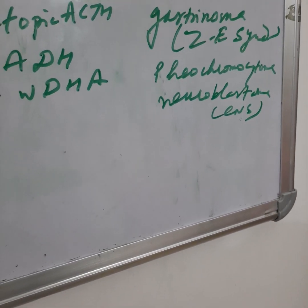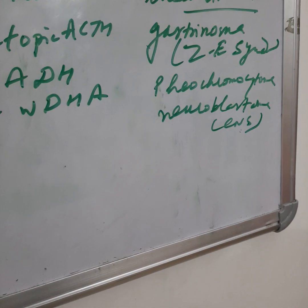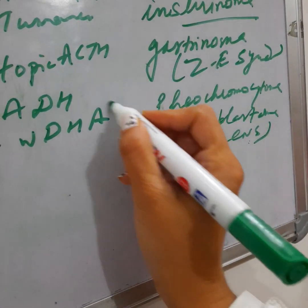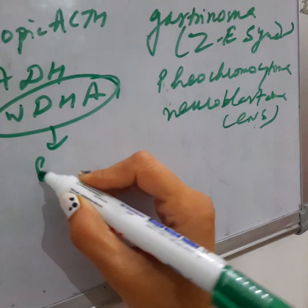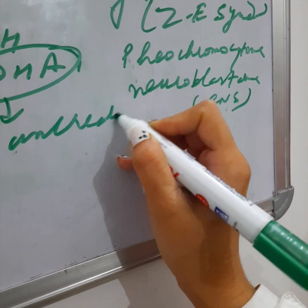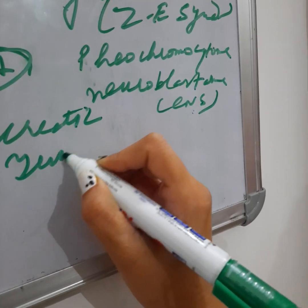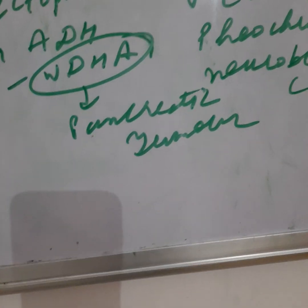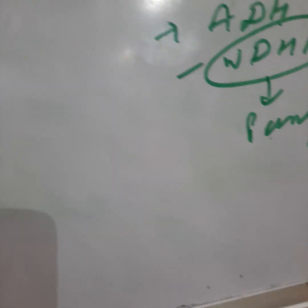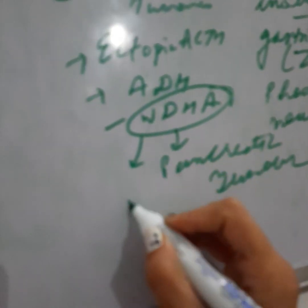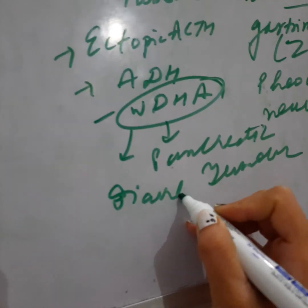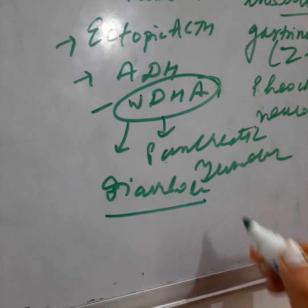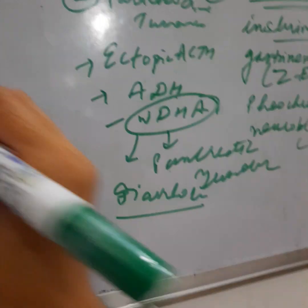WDHA syndrome is related to a non-beta islet cell tumor of the pancreas — a pancreatic tumor. The main symptom of WDHA syndrome is diarrhea, which is an important feature to remember.